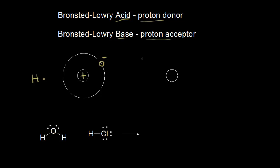If we were to take away this electron, we would only be left with the proton in the nucleus. So when we're talking about a proton, we're talking about the nucleus of a hydrogen atom, which equals H⁺. No longer are we talking about the electron.